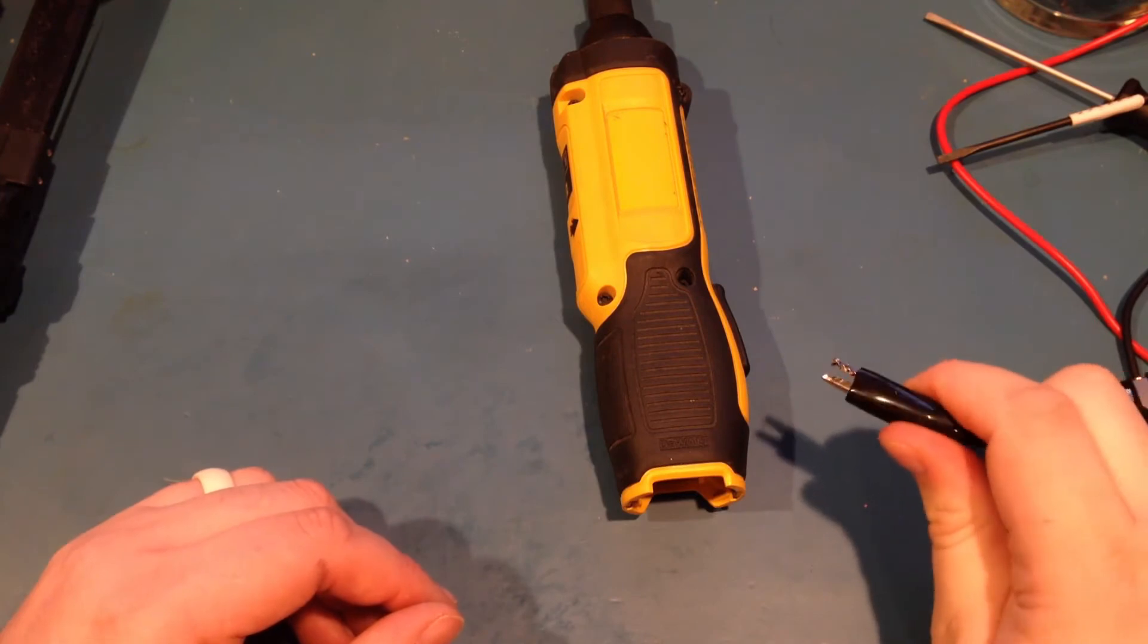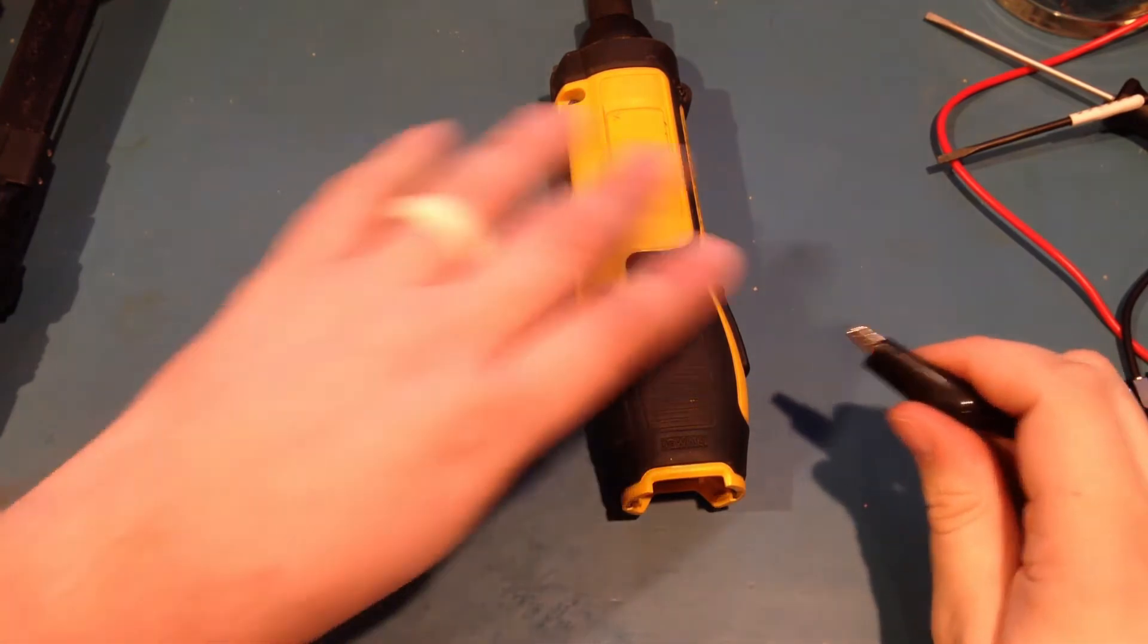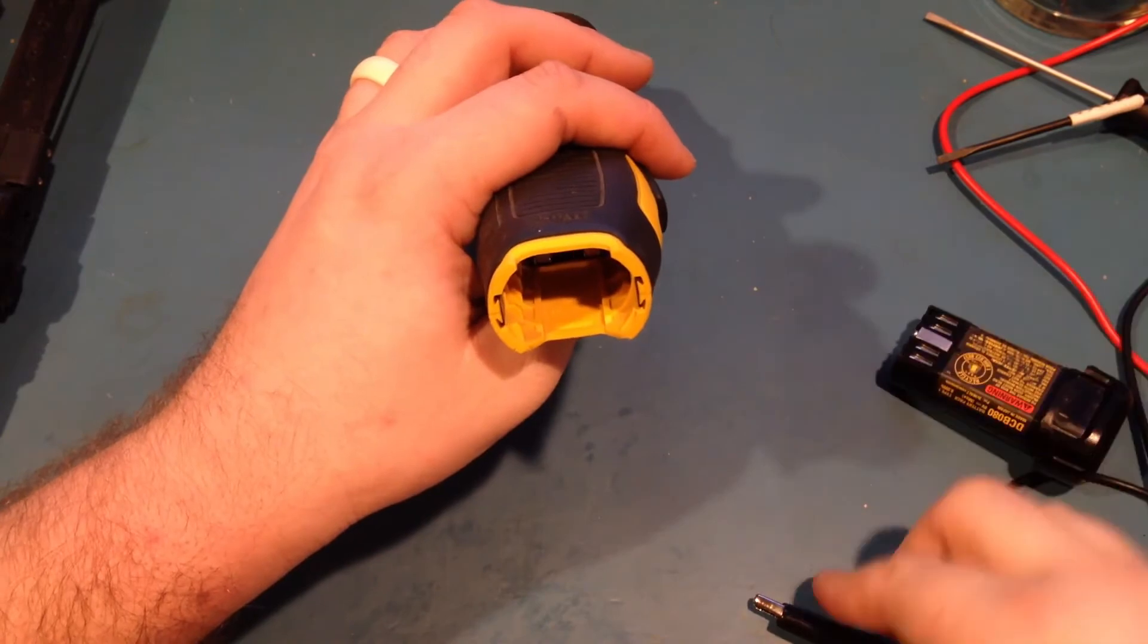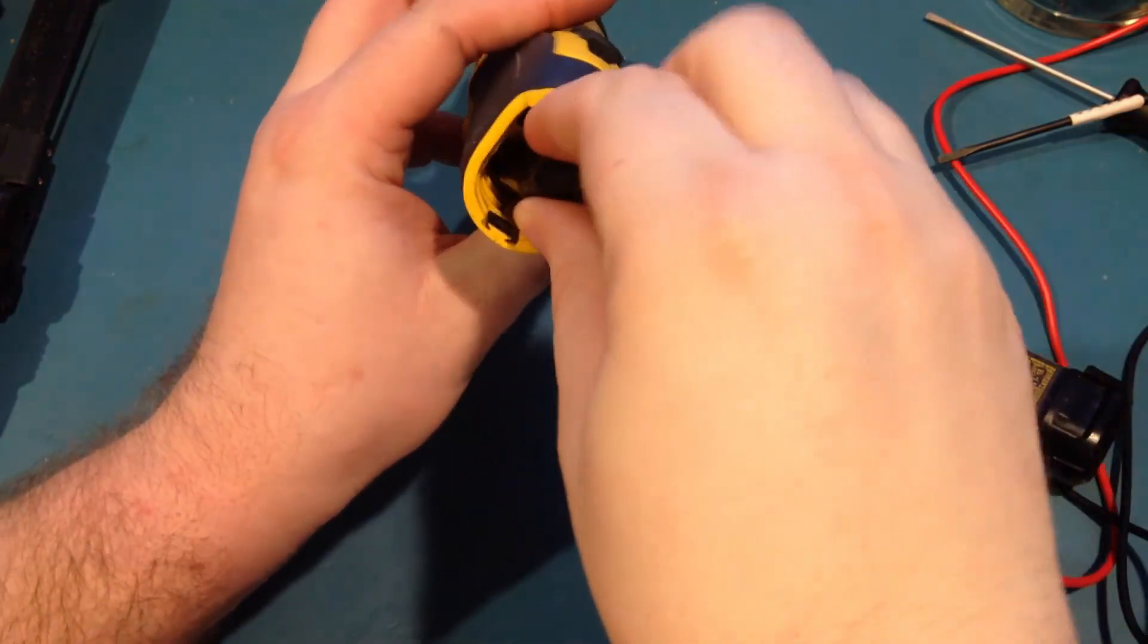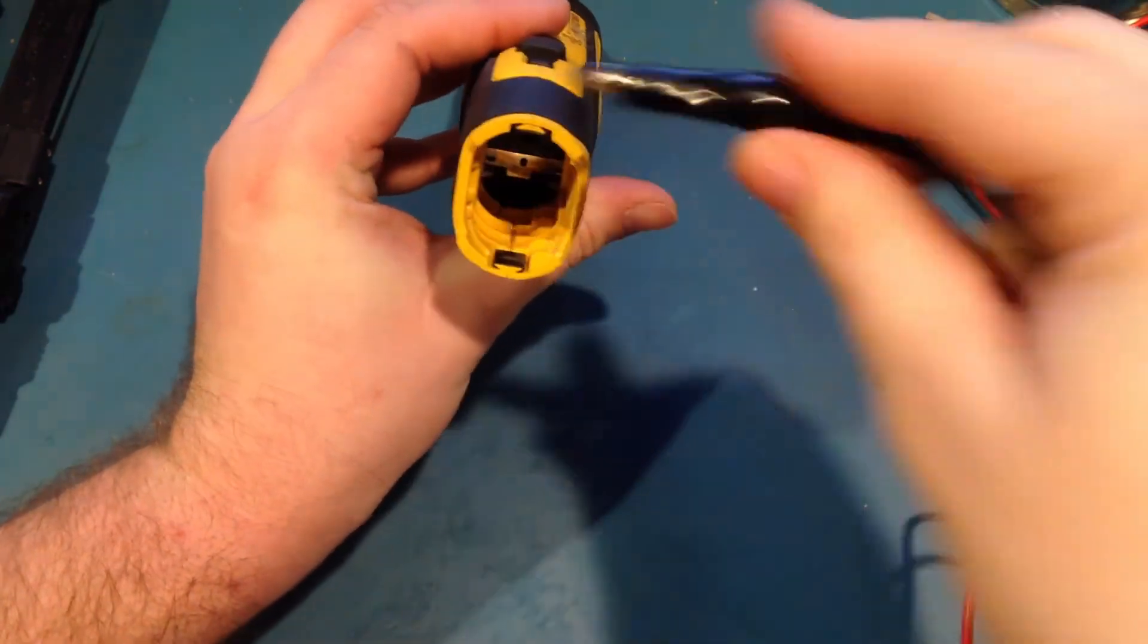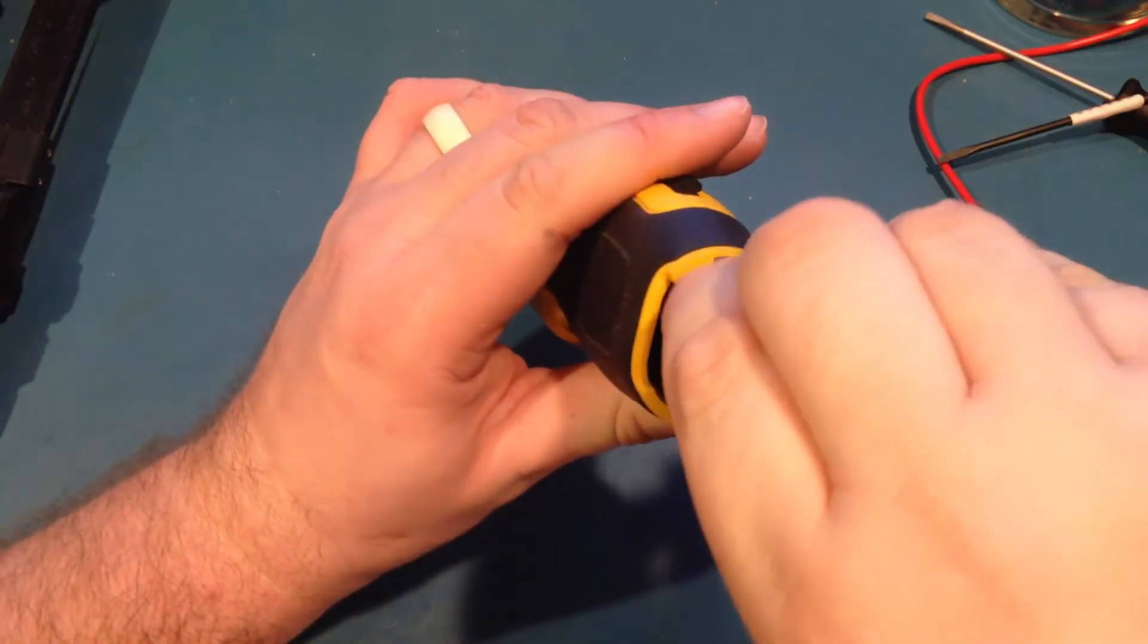Looks like for the DeWalt, just using straight alligator clips is going to be the better option. Again, we'll just pay attention to that orientation, so we have negative or common on the left, when the key is down, and positive on the right.